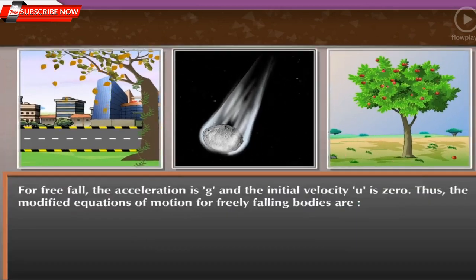For free fall, the acceleration is g and the initial velocity u is zero. Thus, the modified equations of motion for freely falling bodies are: